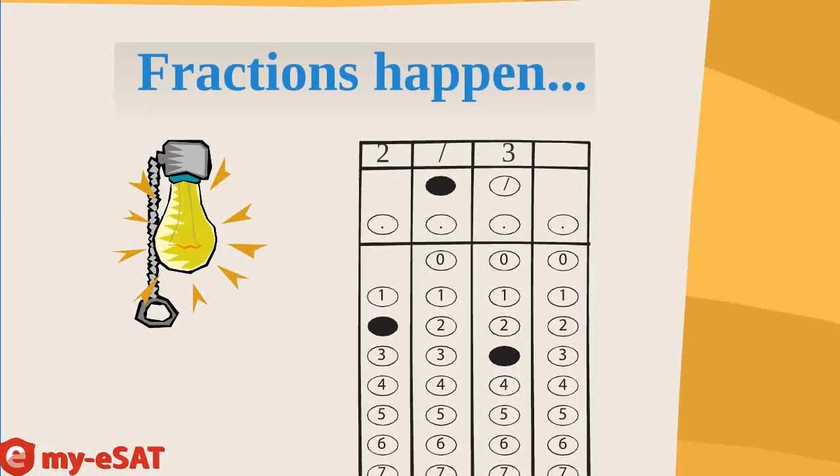So what if your answer was a fraction? Say it's 2 thirds. Then you would write it on top, starting from the left. 2-3. Now go ahead and bubble in the corresponding bubbles. Notice that the last column on the right is blank. That's okay. Just leave it that way.